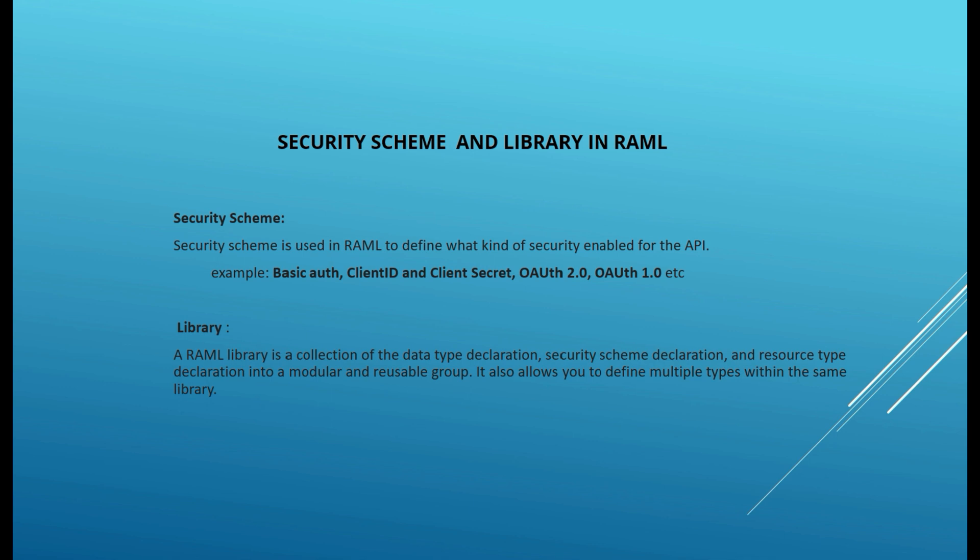A security scheme is used in the API specification to define what kind of security is enabled for the API — whether it's basic authentication, OAuth 1 or 2, or client ID enforcement where the consumer must supply the client ID and secret. We define the security scheme so the consumer understands what kind of security is enabled and can request access accordingly.